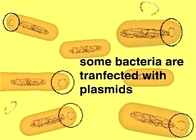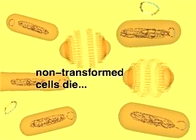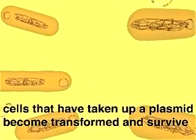The non-transformed cells lack the plasmid with the ampicillin resistance gene and die. Cells that have a plasmid are resistant to ampicillin and survive.